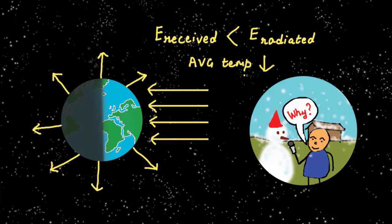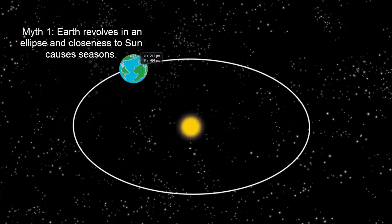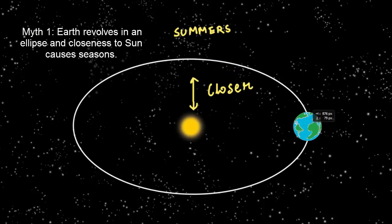We asked this question around and got various answers. The first most common response was that Earth goes around the sun in an ellipse. So when we are closer to the sun, we have summers and winters when we are far.